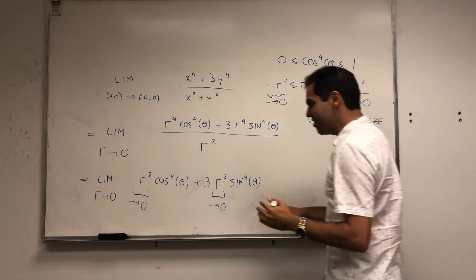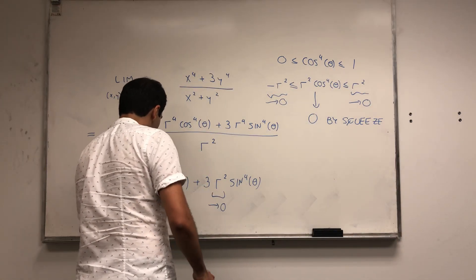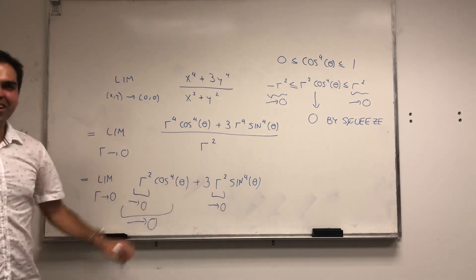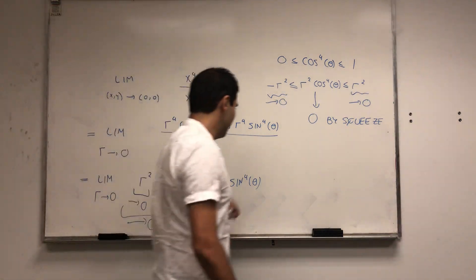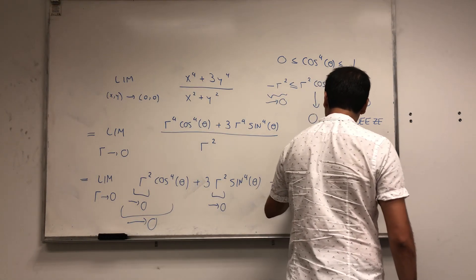So rigorously, this term goes to 0. And using a similar argument, that term goes to 0. So the whole limit equals 0.